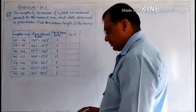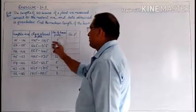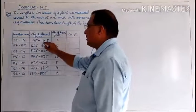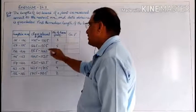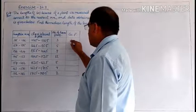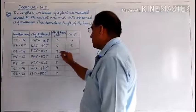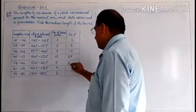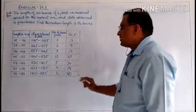Continuing: 153.5–162.5, 162.5–171.5, and 171.5–180.5. Now we calculate the cumulative frequency. Less than 126.5 mm: 3 leaves. Less than 135.5 mm: 3 + 5 = 8. Less than 144.5: 8 + 9 = 17. Less than 153.5: 17 + 12 = 29. Then 29 + 5 = 34, 34 + 4 = 38, 38 + 2 = 40. Total number of leaves = 40.